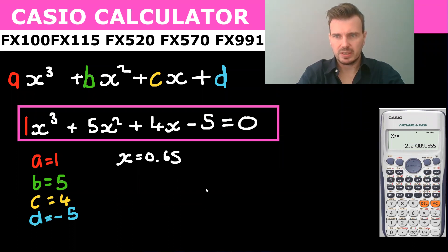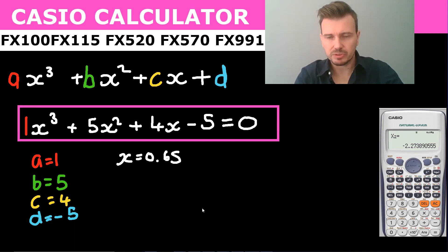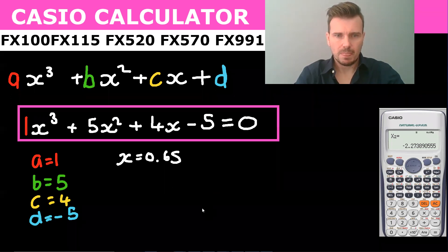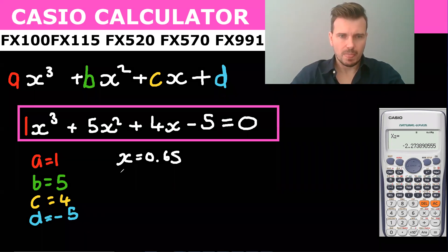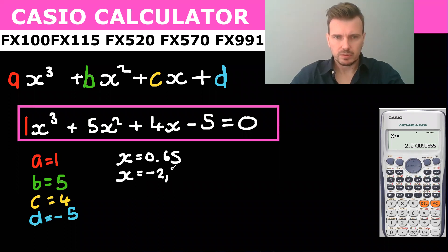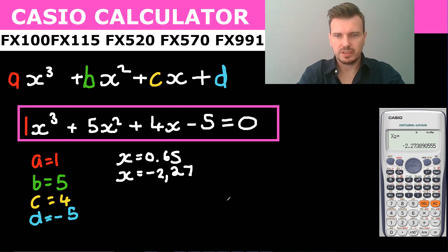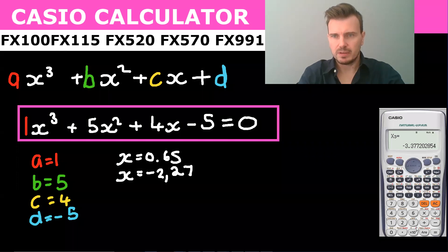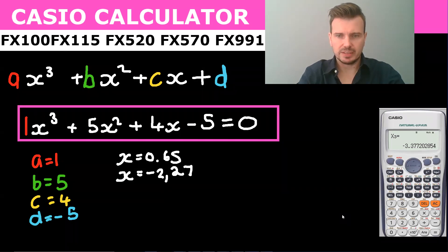My second x is negative 2.27. And my third answer — I push equals again — is negative 3.38.